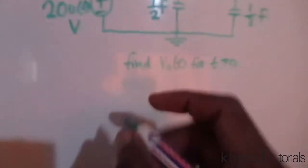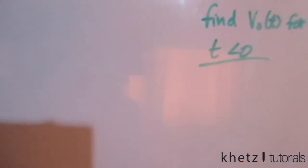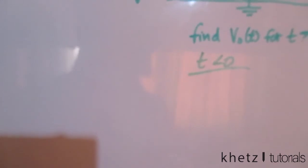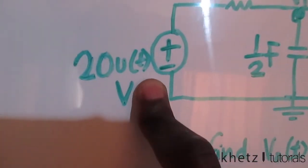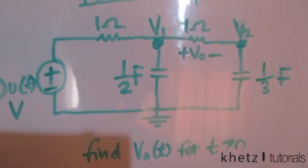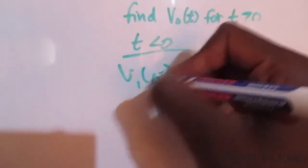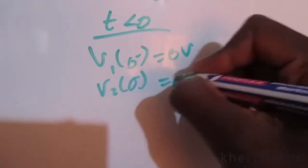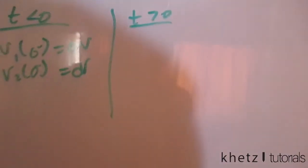Before we do that, let's revise how we deal with general second-order circuits. The first step is to find initial conditions. For time less than or equal to zero, the source is not active — it's only active for time greater than zero. We have a short circuit, no other excitation, no stored energy, therefore v1 and v2 are both zero volts.